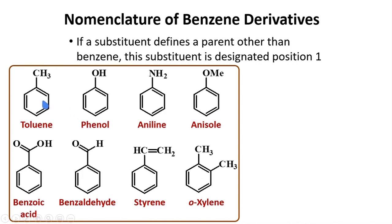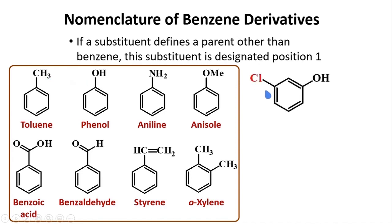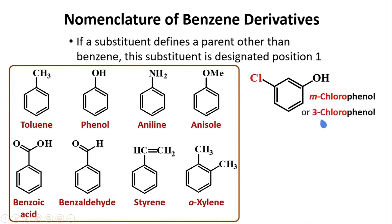When using common names as parents, any substituents must consider that the original substituent is at position one. For example, this compound has an OH group, so we can say it is a phenol and the chlorine is a substituent on the phenol structure. We name this compound meta-chlorophenol, or m-chlorophenol. In systematic nomenclature, this can also be named 3-chlorophenol.